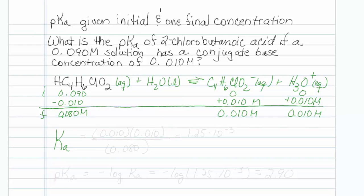Well, the Ka is just going to be equal to conjugate base times hydronium over starting acid, so that would be 0.010 times 0.010 divided by 0.080.